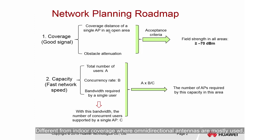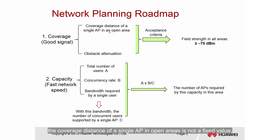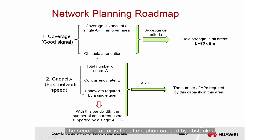Different from indoor coverage where omnidirectional antennas are mostly used, outdoor coverage uses APs with omnidirectional or directional antennas. Therefore, the coverage distance of a single AP in open areas is not a fixed value and may vary according to the AP and antenna models. The second factor is the attenuation caused by obstacles. Typical obstacles in outdoor areas are trees and houses, and signals cannot pass through these obstacles.